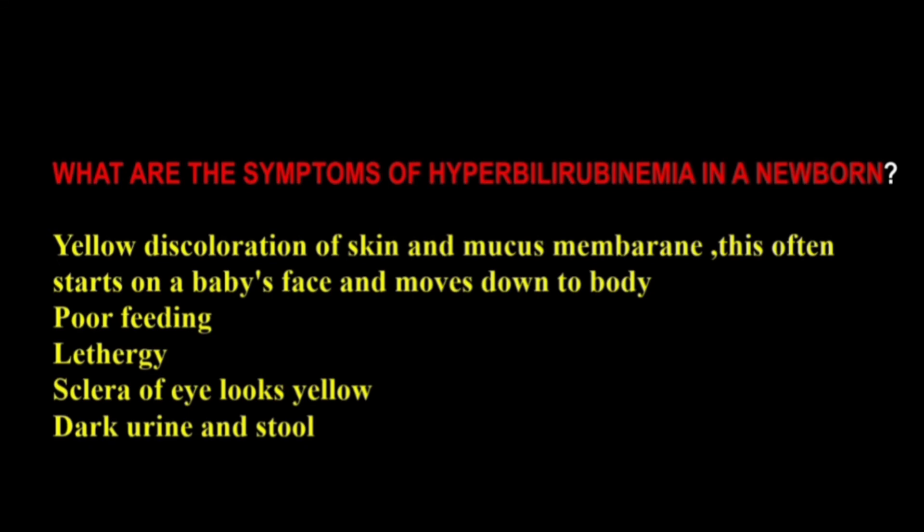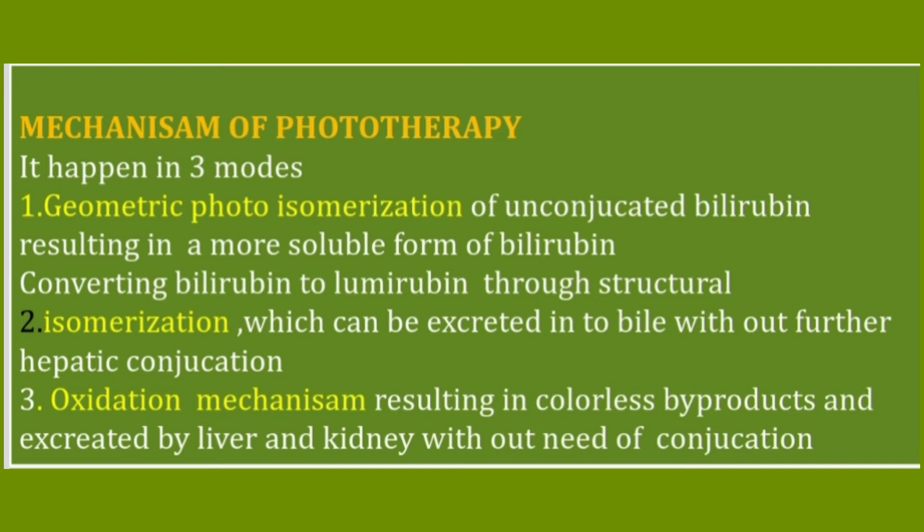The symptoms of hyperbilirubinemia in a newborn baby include yellow discoloration of the skin and mucous membrane, which often starts on the baby's face and moves down to the body. Other symptoms are fever, poor feeding, lethargy, sclera of the eyes looks yellow, dark urine, and pale stool. These are the important signs and symptoms seen in babies suffering with jaundice.